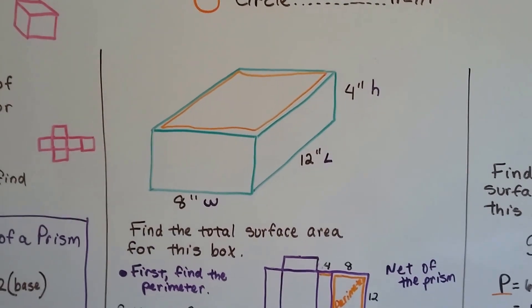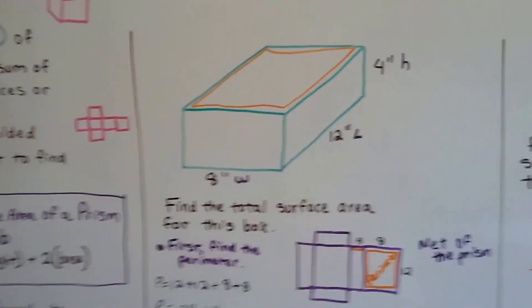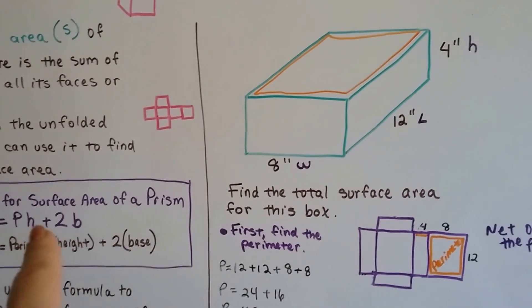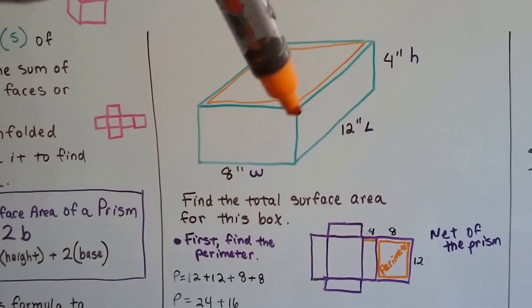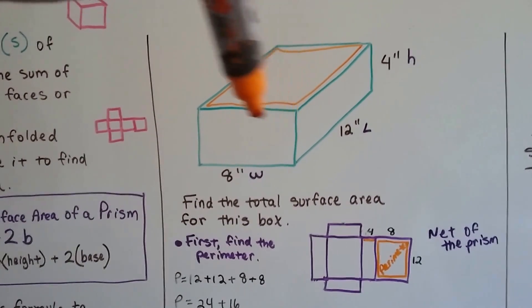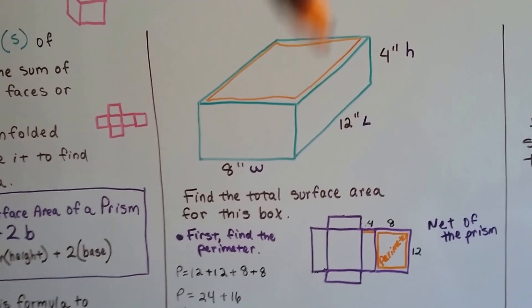Here's a box, and to find the total surface area for this box, we are going to follow this formula. The first thing we need to do is find the perimeter, and that's this orange line right here, it's the measure of the edge of the box.